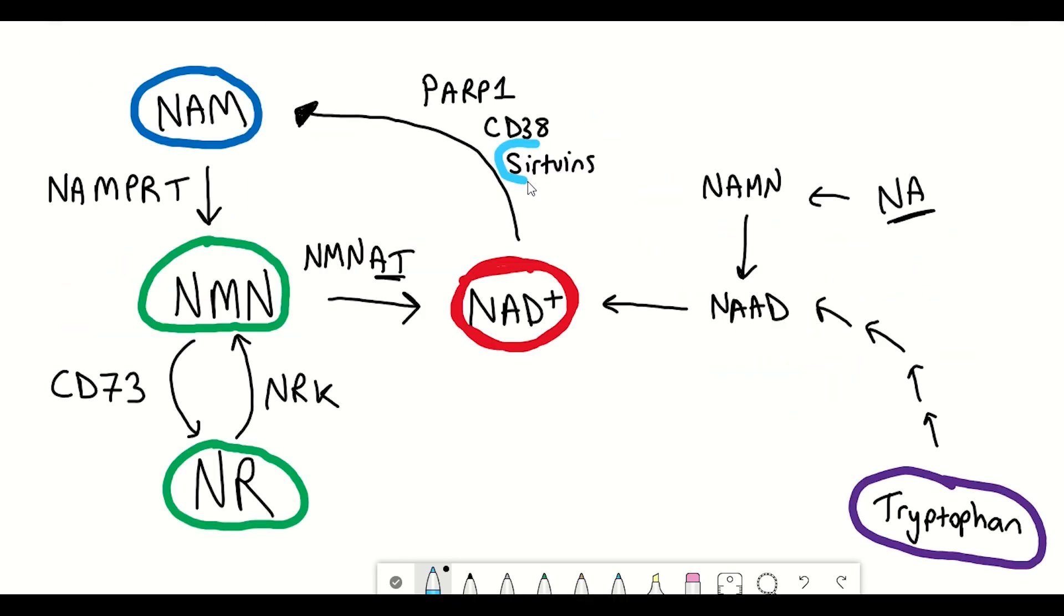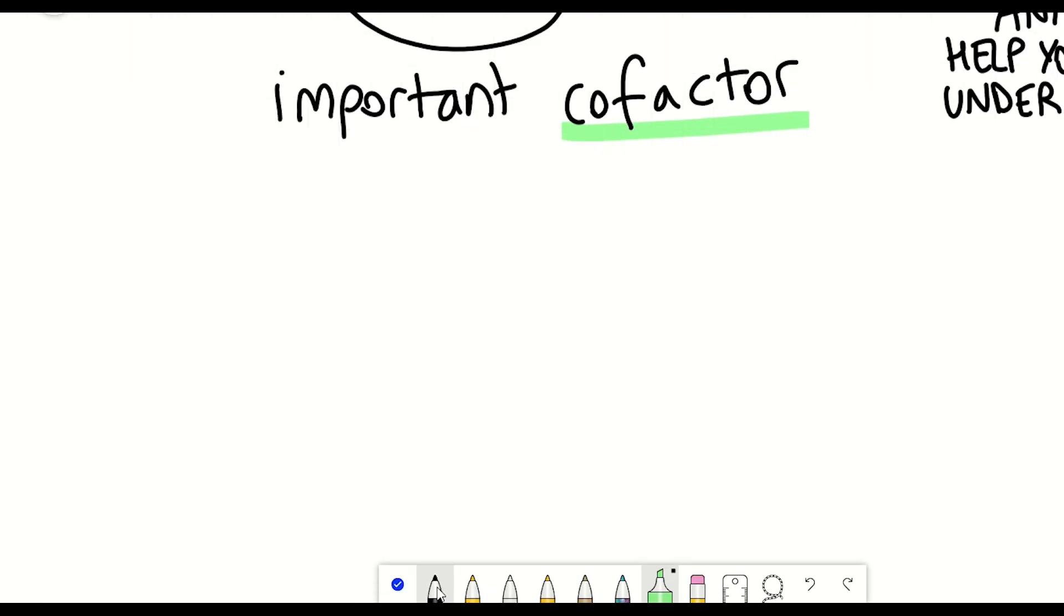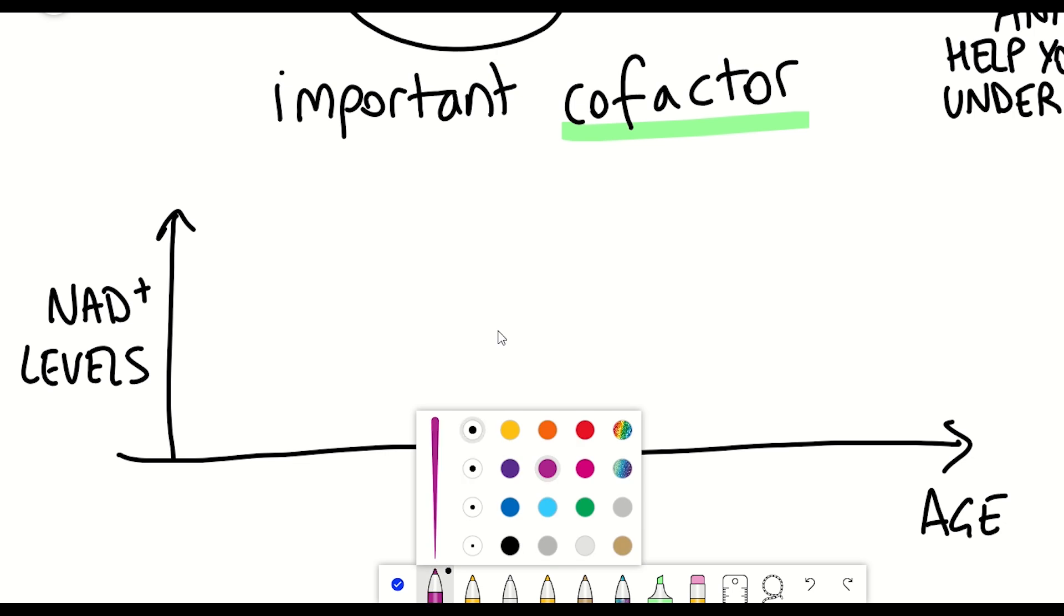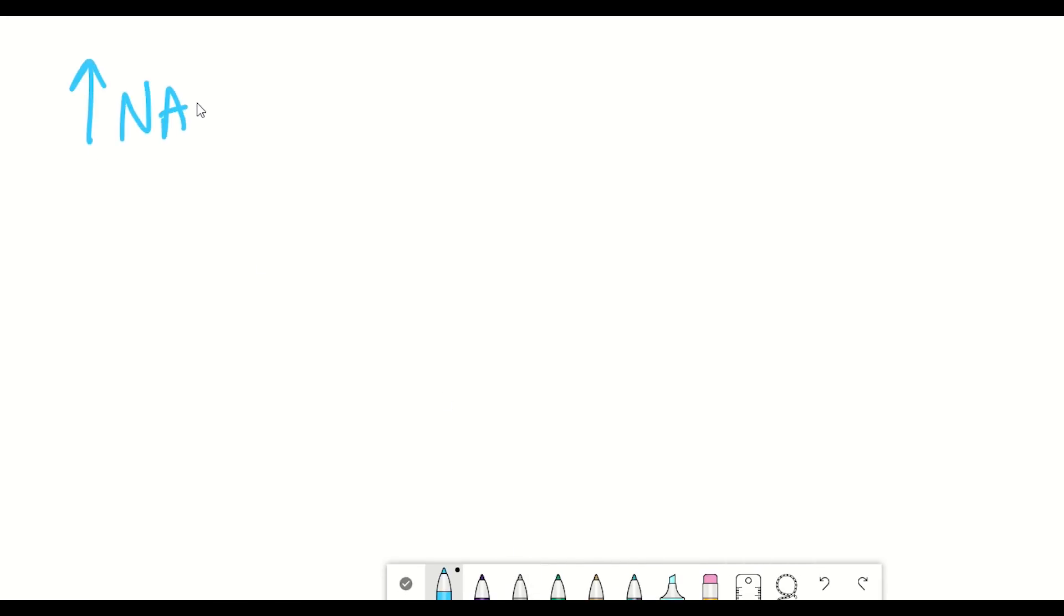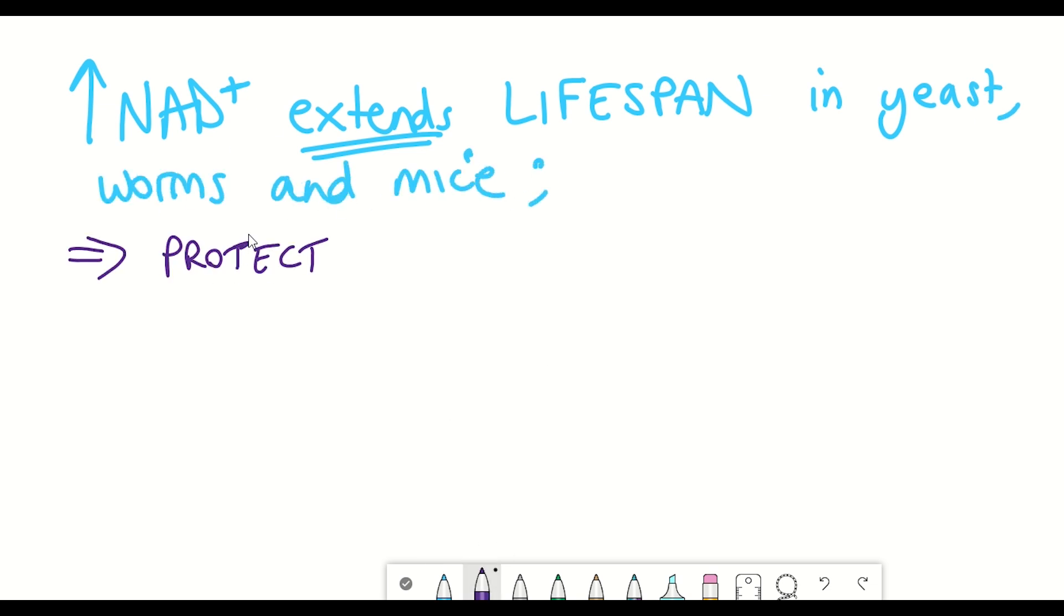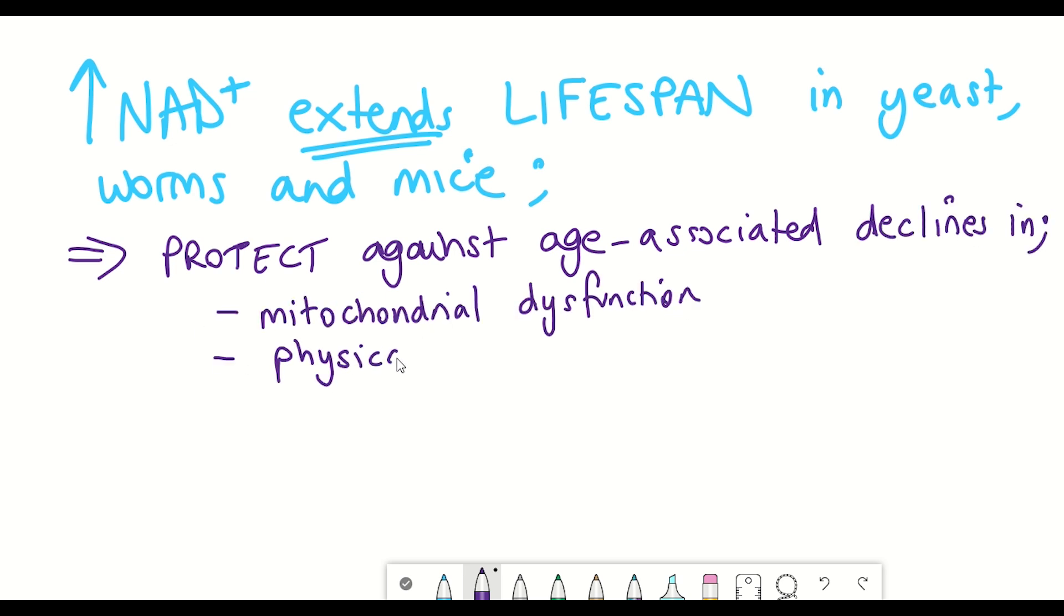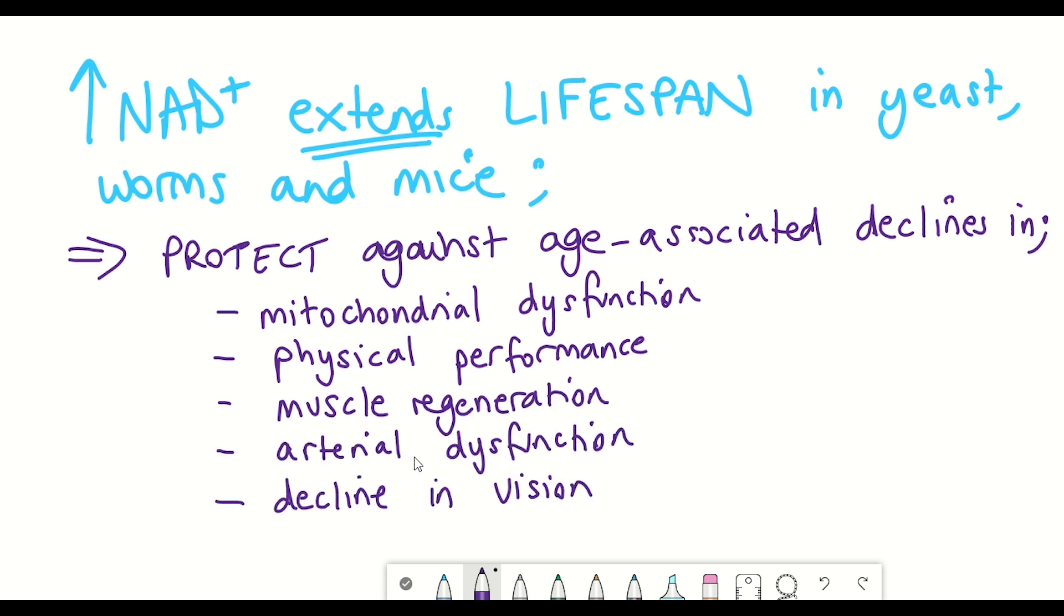And I've spoken about NAD+ quite a few times on this channel, and so I'll link down a couple of videos in the description if you want to know a bit more about it. So NAD+ levels have been shown to decline with age, and mechanisms that increase levels of NAD+ have been shown to extend lifespan in yeast, worms, and mice. But as I said in this video, I was more interested in looking at health span as opposed to just lifespan. So it's interesting to see that in these wealth of studies, NAD+ supplementation has also protected against age-associated declines in mitochondrial dysfunction, physical performance, fission, and arterial dysfunction, just to name a few.